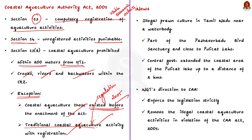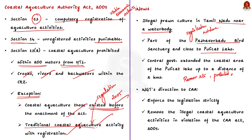In Tamil Nadu, illegal prawn culture activities were being carried out near a water body without prior approval and registration. The water body is a part of the Palaverikadu Bird Sanctuary and is close to Pulikat Lake, which is a Ramsar site of international importance and a protected area. Due to the ecologically fragile nature of Pulikat Lake, the Central Government extended the coastal area up to a distance of 2 kilometers. The National Green Tribunal asked the Coastal Aquaculture Authority to enforce the legislation strictly and remove the illegal coastal aquaculture activities carried out without registration or in violation of the CAA Act.